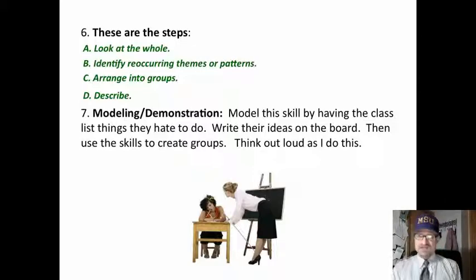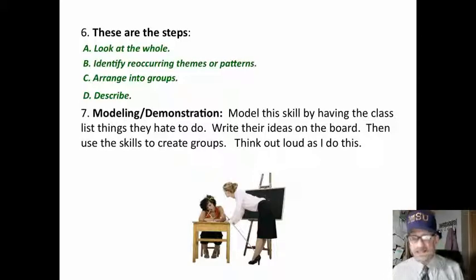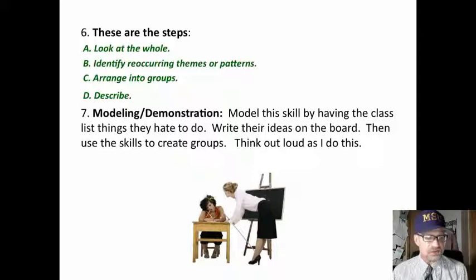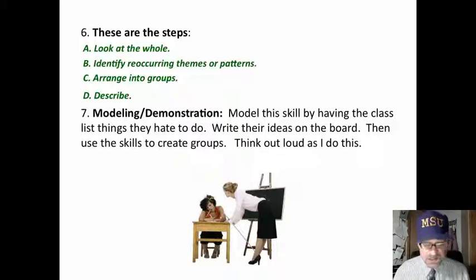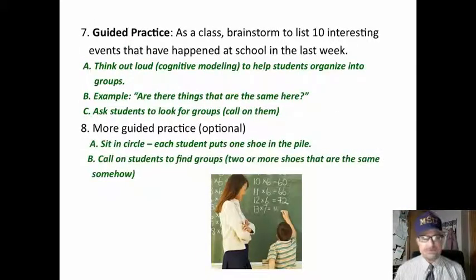I would then model this skill by having the class list things they hate to do. We'd write their ideas on the board, then use the skill to create groups, and I would think out loud — that's called cognitive modeling. For example: 'Hmm, let me think... here are two things the same.'